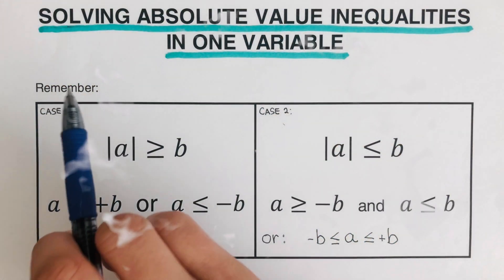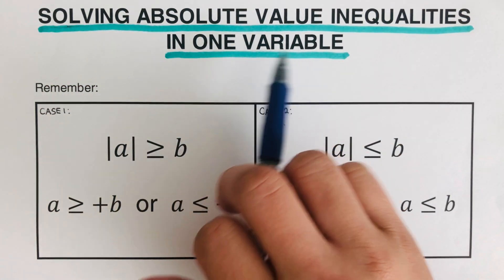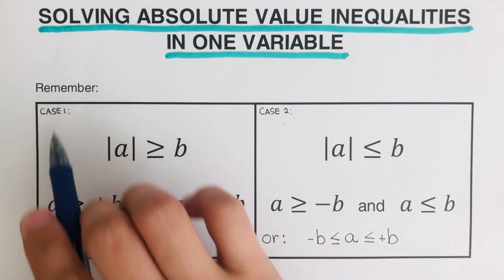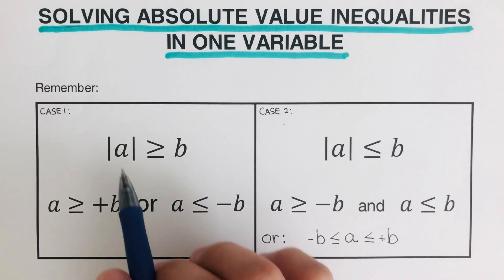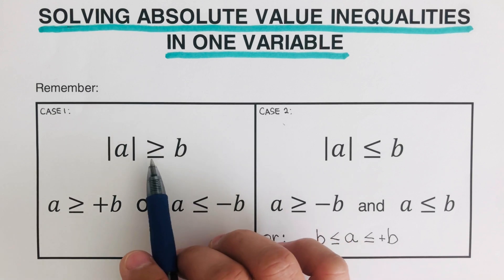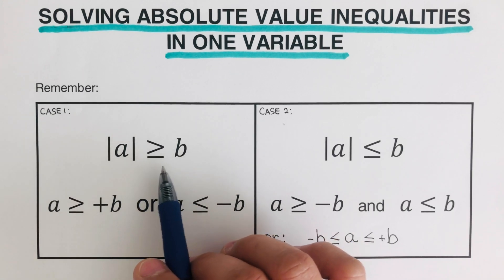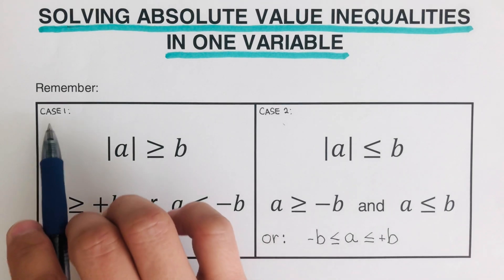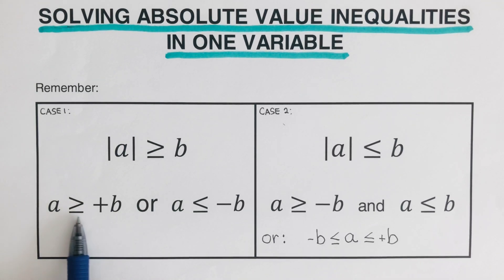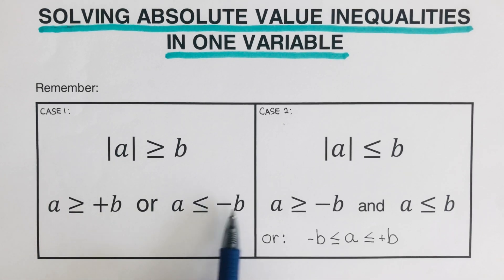In this video we will be solving absolute value inequalities in one variable. There are two cases. Case one happens when the absolute value of a is greater than or equal to b — this can also be just greater than. Whenever we have a greater than case, the conjunction we use is 'or', meaning a is greater than or equal to positive b, or a is less than or equal to negative b.